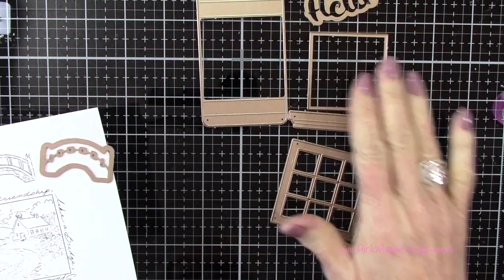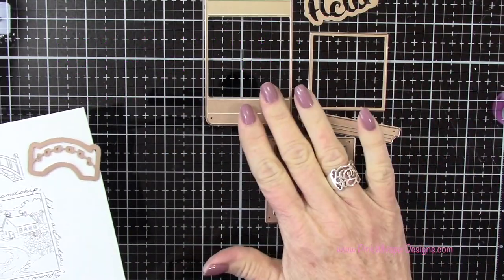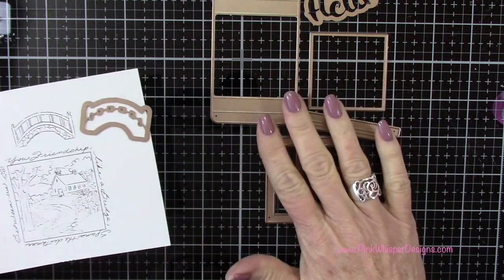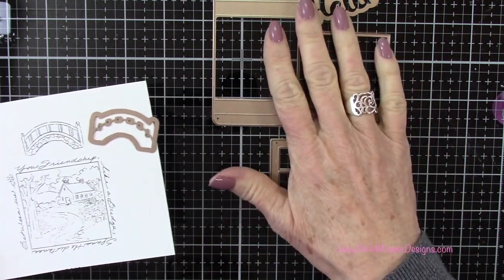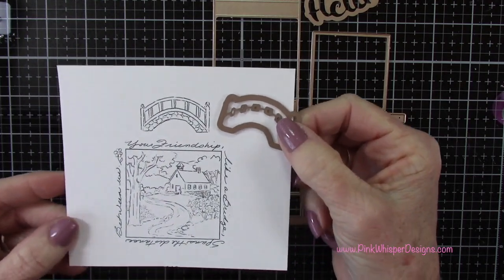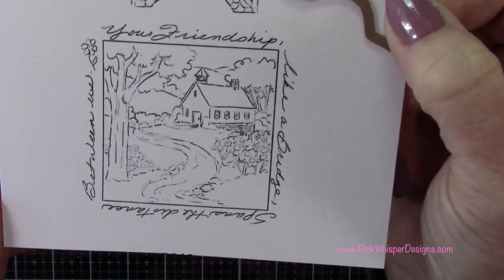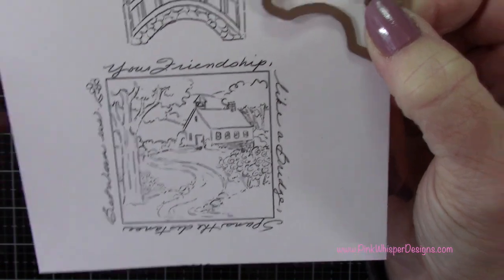The die cuts out the bridge, and to the right here are all the pieces to the shadow box window die set, number 5-4-0-8. So you do need the two sets in order to create this card.